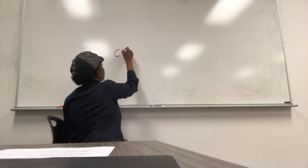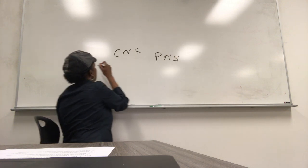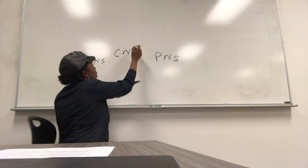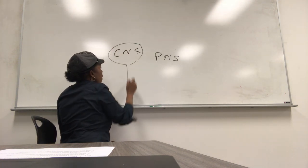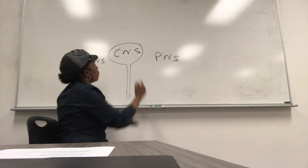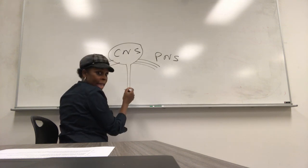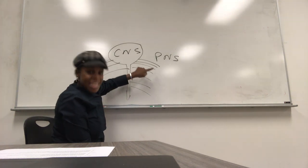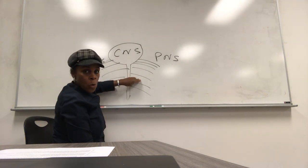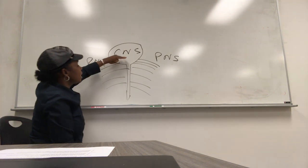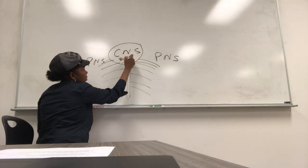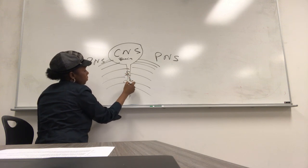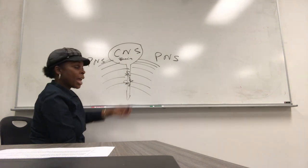The nervous system is divided into two parts: the central nervous system and the peripheral nervous system. The central nervous system is made of the brain and the spinal cord. The peripheral nervous system is made of all the nerves coming out of the brain — called cranial nerves — and the nerves coming out of the spinal cord — called spinal nerves.